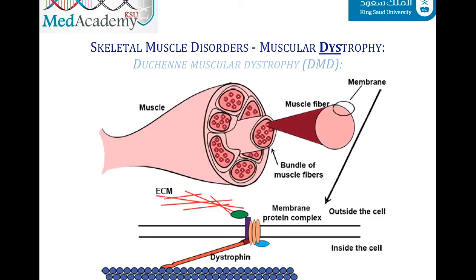Duchenne muscular dystrophy is a devastating disease caused by a loss-of-function mutation in the gene encoding the dystrophin protein. Dystrophin is a muscle cell membrane protein responsible for stabilizing muscle cells during contraction, allowing them to contract and relax without damage. A dystrophin defect makes muscle cells vulnerable to transient membrane tears during contraction, leading to calcium influx, intracellular signaling disturbance, and ultimately muscle fiber degeneration that outpaces the capacity for repair.